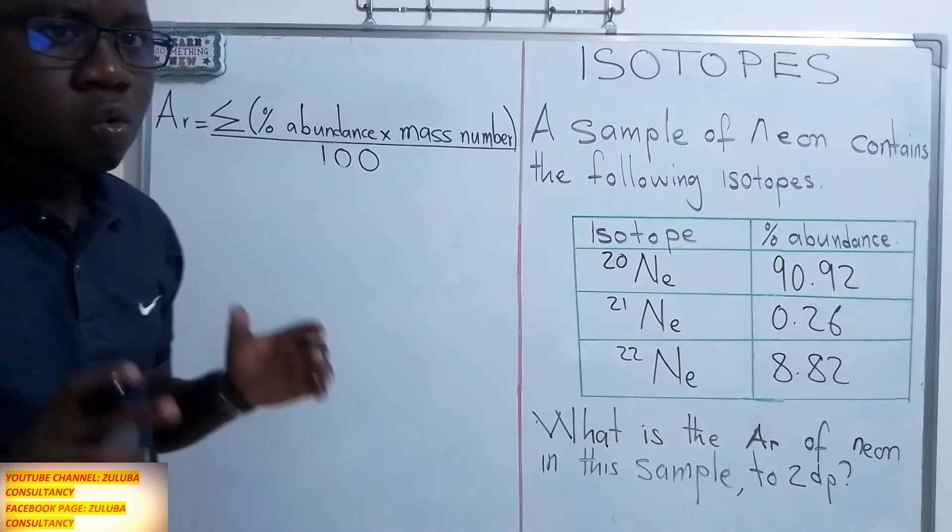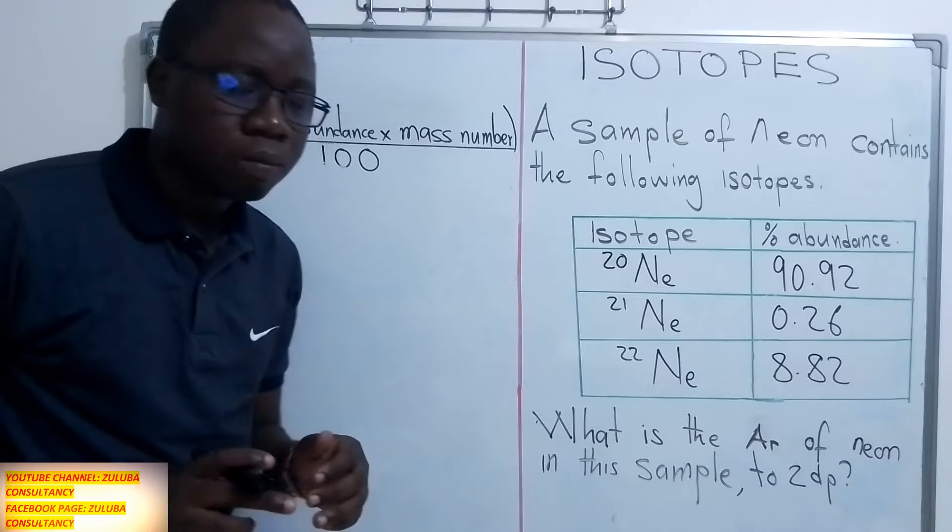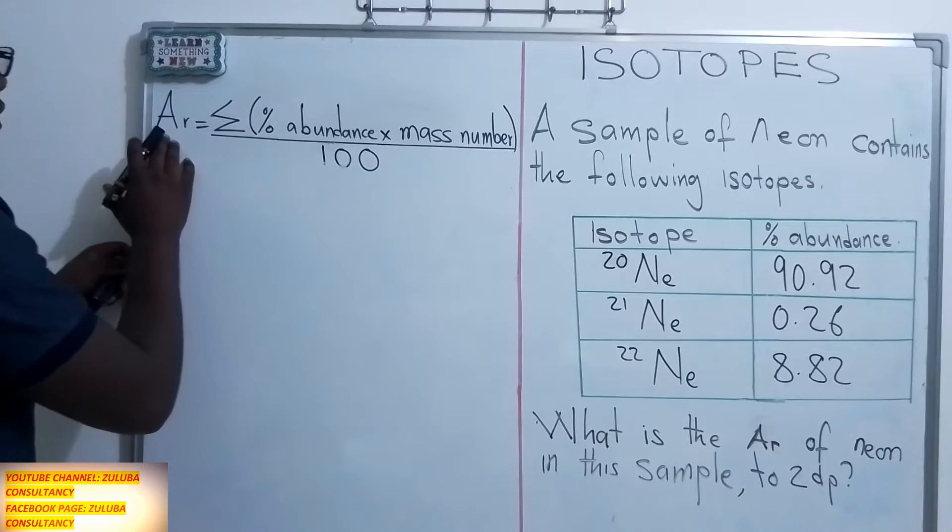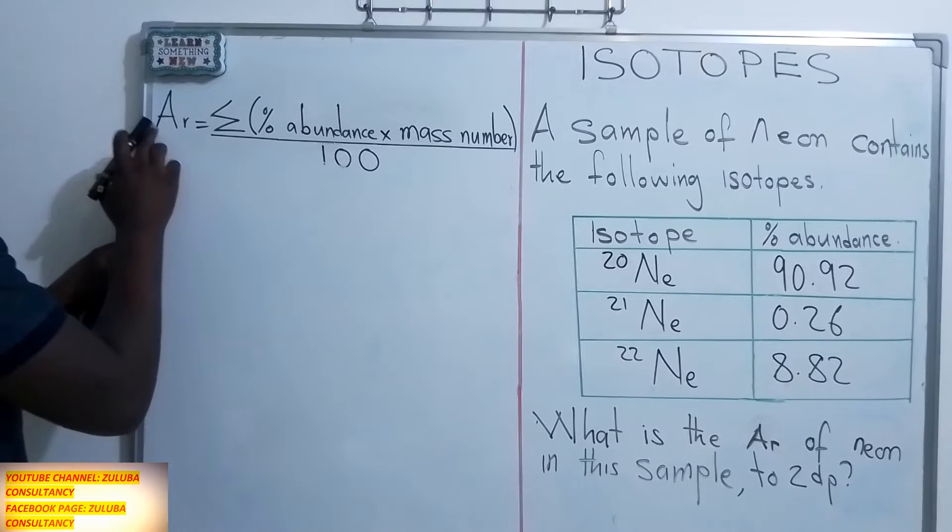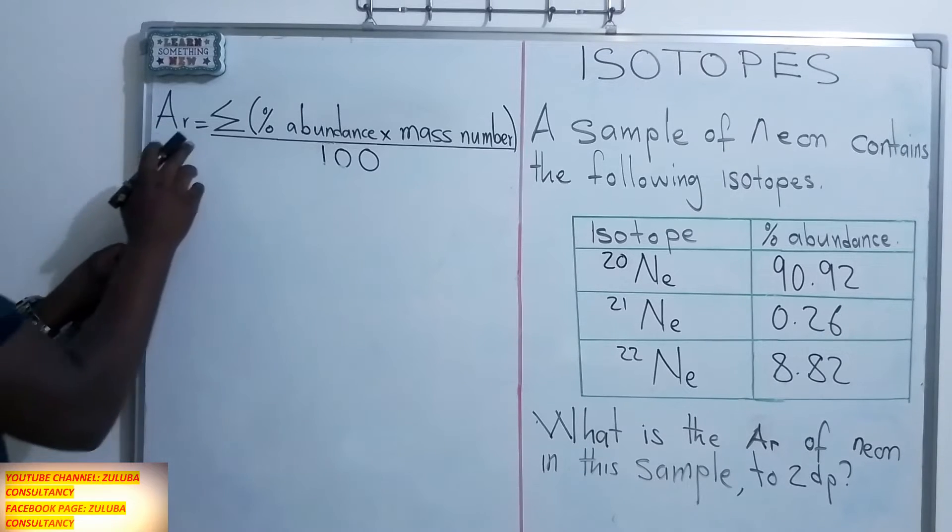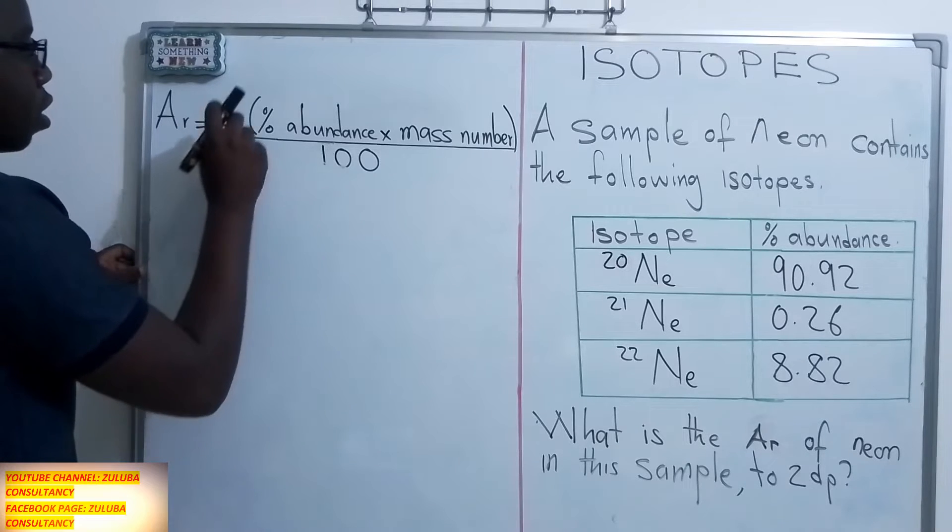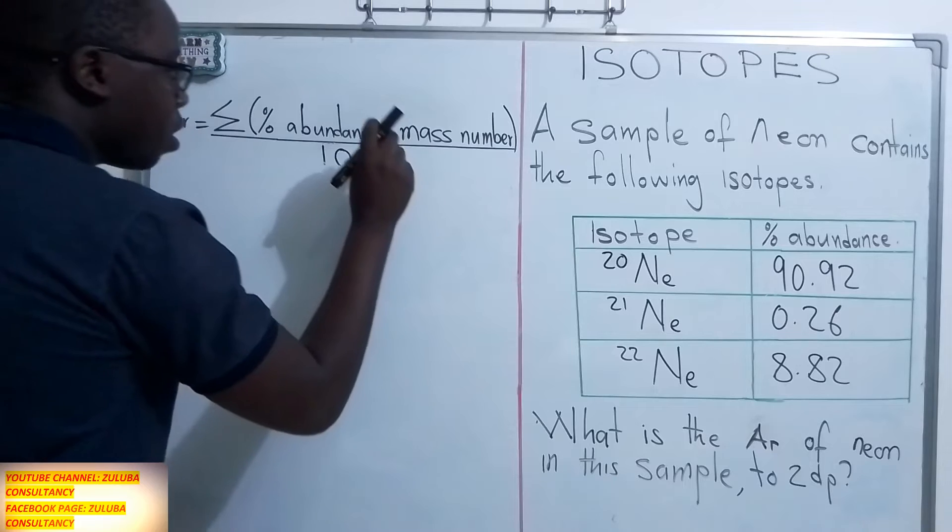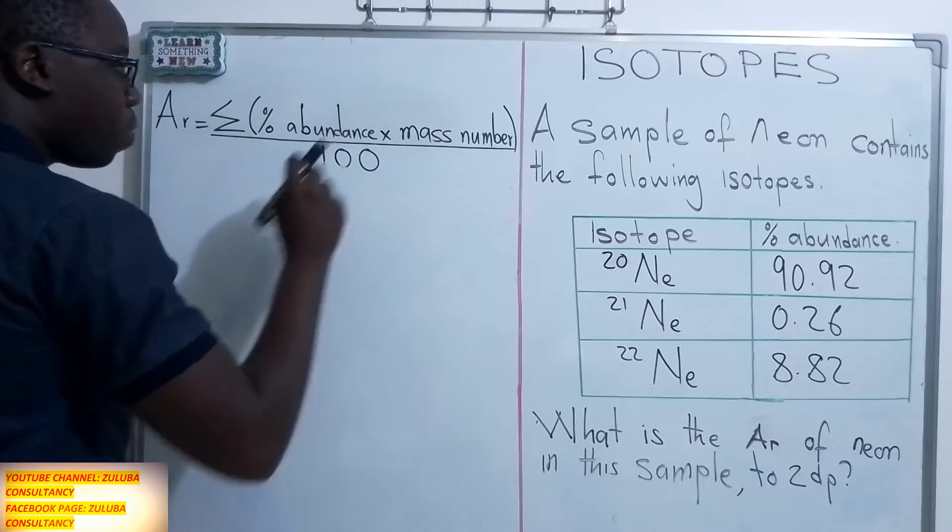So let's see how we calculate this question. The first thing is for us to remember the formula that the relative atomic mass is equal to the sum of the percentage abundance multiplied by the mass number divided by 100.